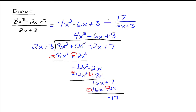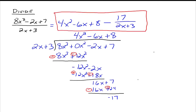You also could have written this as plus a negative 17 over 2x plus 3 — either way is mathematically correct. Long division can be used to help us find other things a little later on. Right now we're just learning the algorithm. That's it on the long division of polynomials. Study well — please let me know if you have any questions.